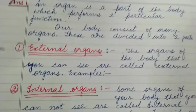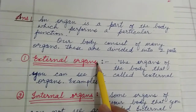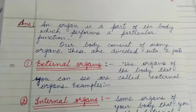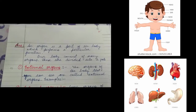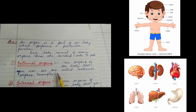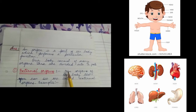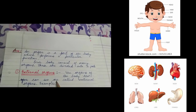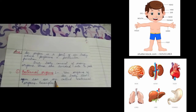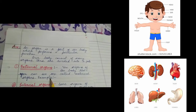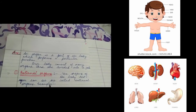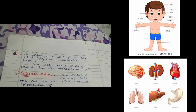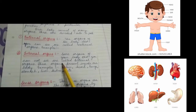These organs are divided into two parts: external organs and internal organs. The organs of the body that you can see are called external organs. Examples include eyes, hands, legs, and nose.